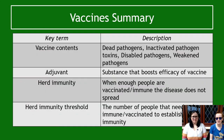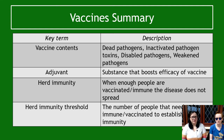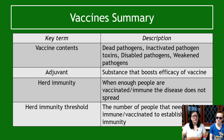To summarize the key things from this video: the contents of a vaccine could be dead pathogens, an inactivated pathogen, a disabled pathogen, or a weakened pathogen. An adjuvant is a substance that boosts the efficacy of a vaccine — how well it works. Herd immunity is when enough people in a society are vaccinated or immune to a disease so it won't spread. And the herd immunity threshold is the number of people that need to be immune or vaccinated for herd immunity to happen.